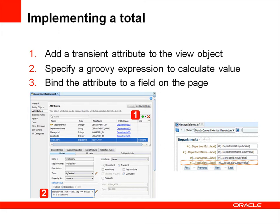We'll go over the expression in detail during the demonstration that follows. After specifying the transient attribute, you bind the attribute to a field on the page — in this case, a field called Total Salary. Another approach would be to create an attribute that calls the SQL Sum function to calculate the value. Using Groovy is convenient, though, because it allows you to calculate the value of an attribute without reissuing the SQL query for the view object.